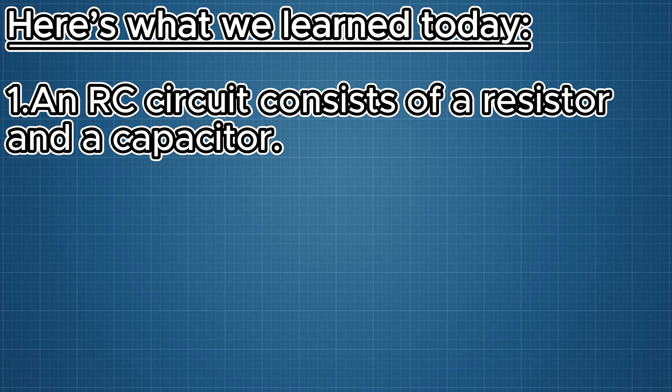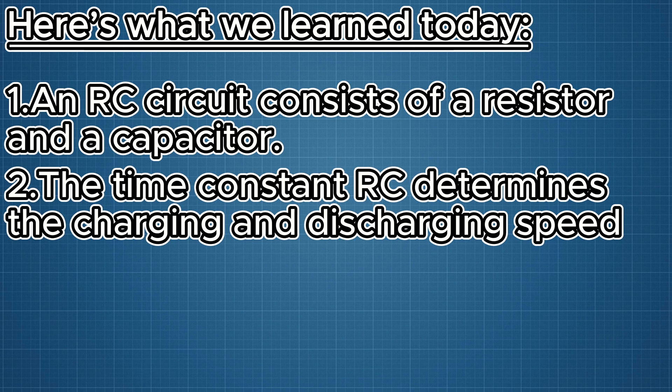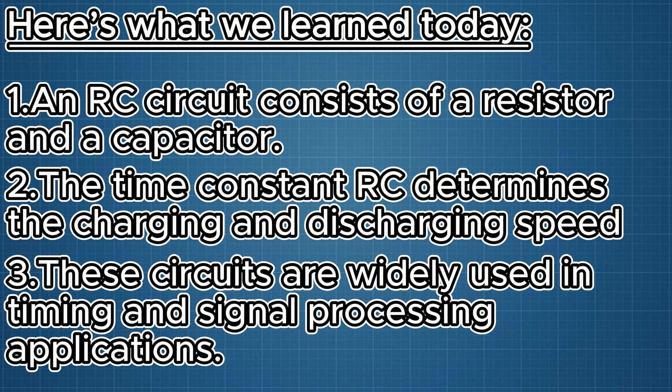Here's what we learned today. An RC circuit consists of a resistor and a capacitor. The time constant RC determines the charging and discharging speed. These circuits are widely used in timing and signal processing applications.